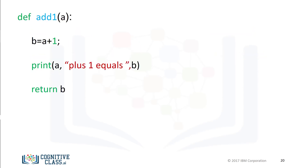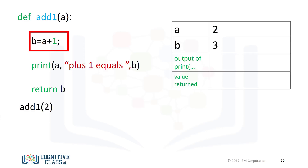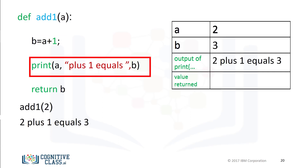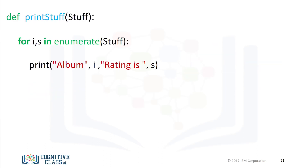Usually, functions perform more than one task. This function prints a statement then returns a value. Let's use this table to represent the different values as the function is called. We call the function with an input of 2. We find the value of b. The function prints the statement with the value of a and b. Finally, the function returns the value of b — in this case, 3. We can use loops in functions.